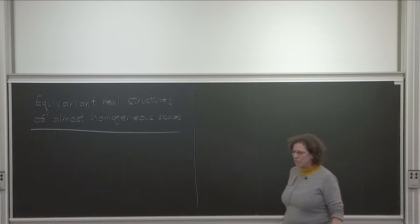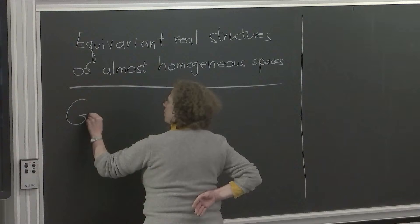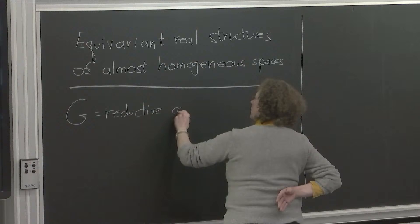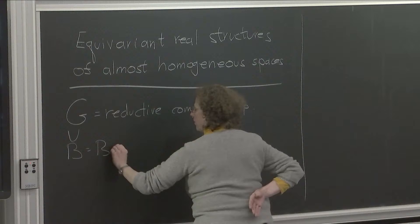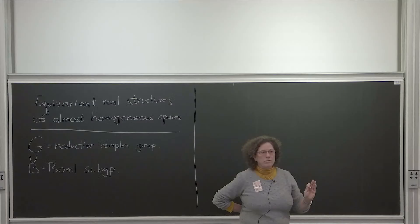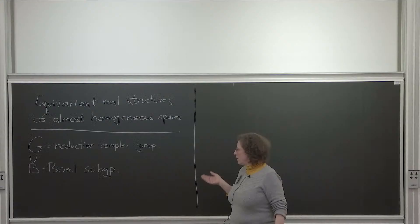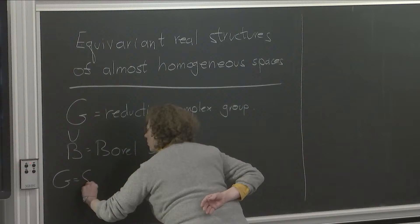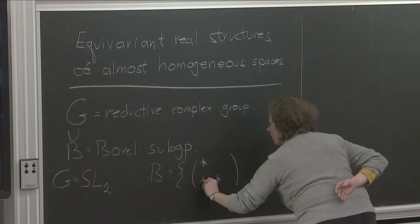So what I'm going to do today is talk about another aspect of this study where the goal is to give a complete classification of equivariant real structures. And it's in the case where X is an almost homogeneous space. I spoke a little bit about homogeneous the last time — I will recall that and then go on to the almost homogeneous space. So I'll start with giving some definitions of the objects and then go on to explain how we can study them. So for me, the group will always be a reductive complex group.